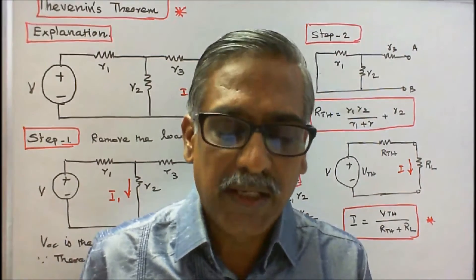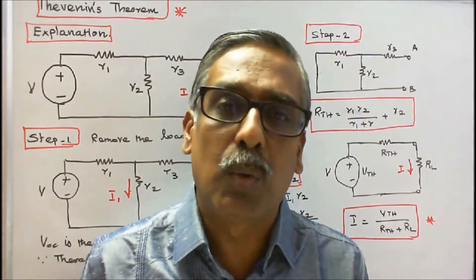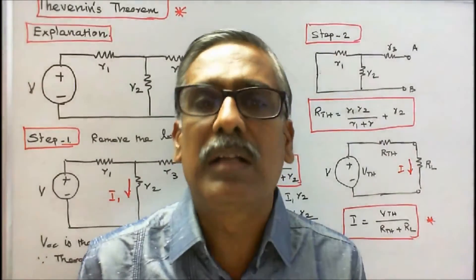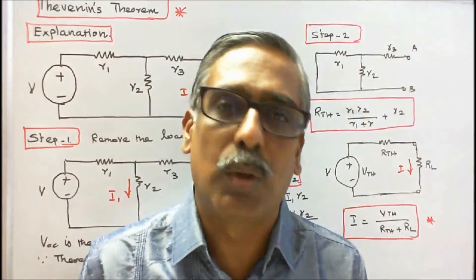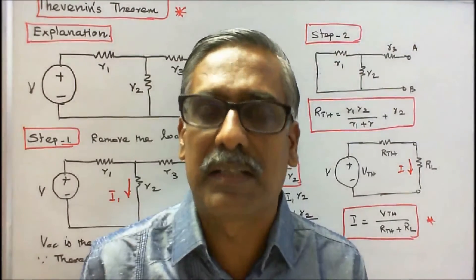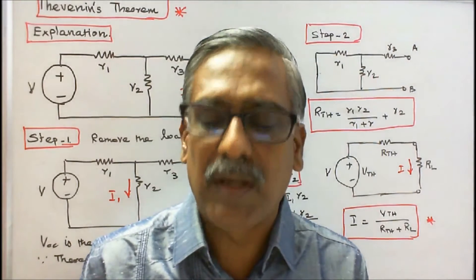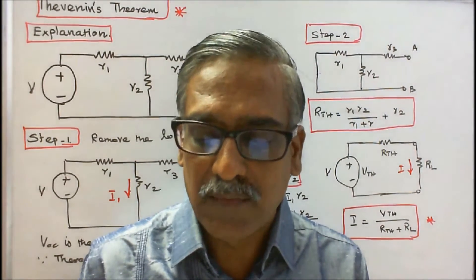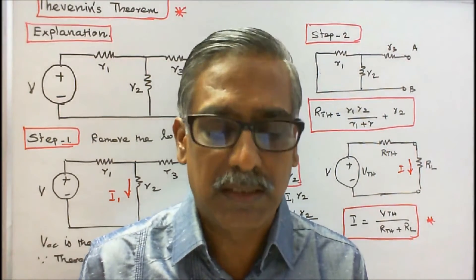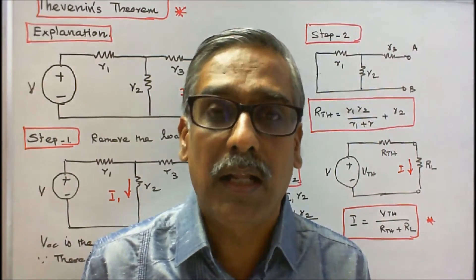Alternatively, any two-terminal linear network containing independent voltage and current sources may be replaced by a constant voltage source — called Thevenin's voltage — in series with a resistance called Thevenin's resistance. Thevenin's voltage is the open-circuit voltage between the terminals, and Thevenin's resistance is the resistance of the network as seen from the two terminals with all sources replaced by their internal resistances.